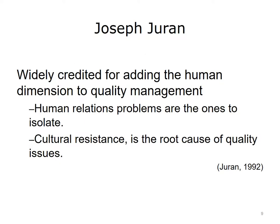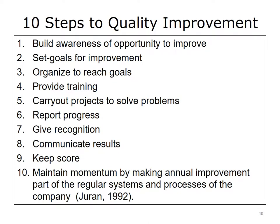Joseph Juran is widely credited for adding the human dimension to quality management. For him, human relations problems were the ones to isolate. Resistance to change, or in his terms cultural resistance, was the root cause of quality issues. Compare Juran's 10 Steps to Quality Improvement to Deming's 14 Points for Business Survival and Prospering. Juran defines quality as fitness for use in terms of design, conformance, availability, safety, and field use. His concept more closely incorporates the viewpoint of the customer. He measures everything and relies on systems and problem-solving techniques. Unlike Deming, he focuses on top-down management and technical methods rather than worker pride and satisfaction.